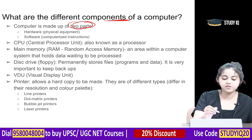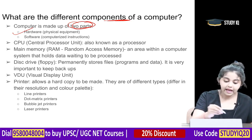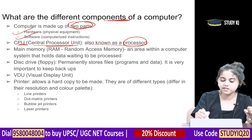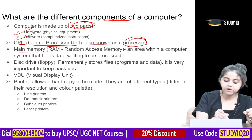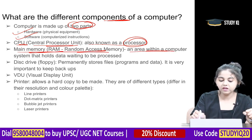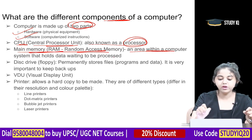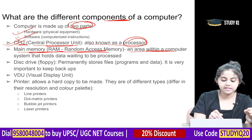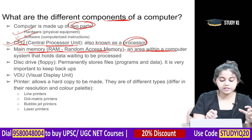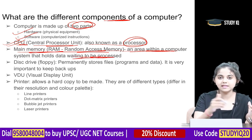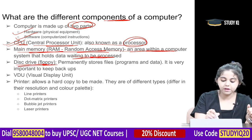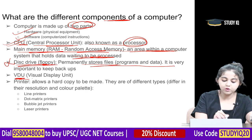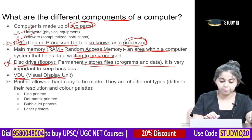A computer is made up of two parts: hardware — the physical equipment — and software — the computerized instructions. The CPU, also known as the processor, is the main processing unit. Main memory is called RAM — random access memory — which holds data waiting to be processed. Other components include a disk drive for permanent file storage, VDU (visual display unit), and printer for hard copies. There are different types of printers: line, dot matrix, bubble jet, and laser printers.